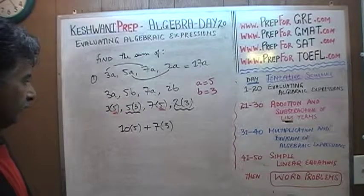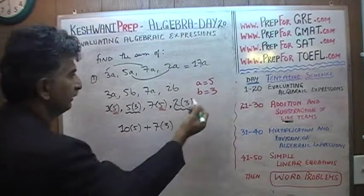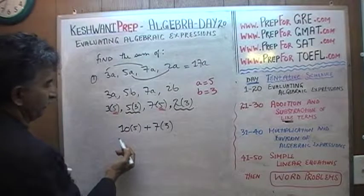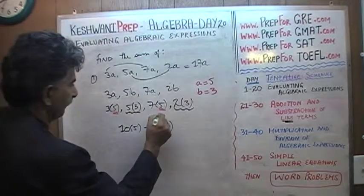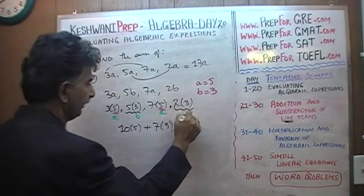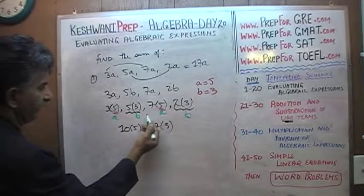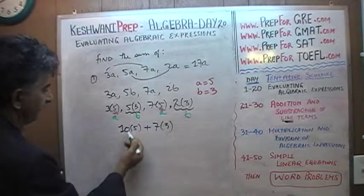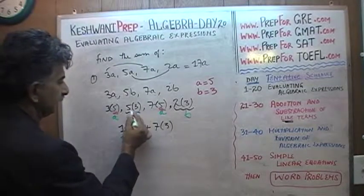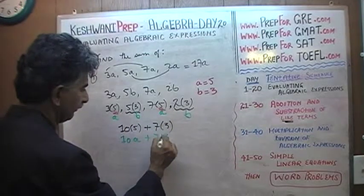Now what I am going to do is go back and replace these 5's and 3's with a's and b's. a is 5, so wherever there is a 5 — not this 5, this 5 belongs to the coefficient of b — here is your a, here is your a, here is your b, and here is your b. 3 fives and 7 fives made 10 fives, so there is your 10a. Plus 5 b's and 2 b's make 7b. Voila, there you go.